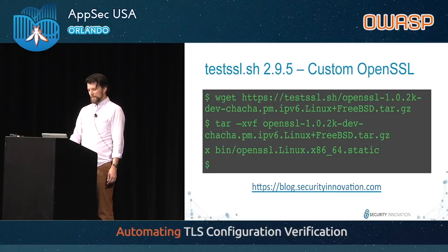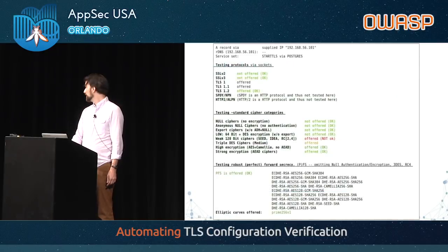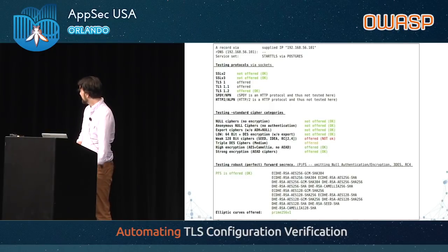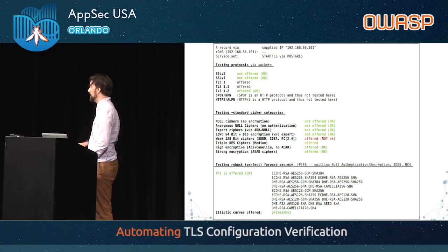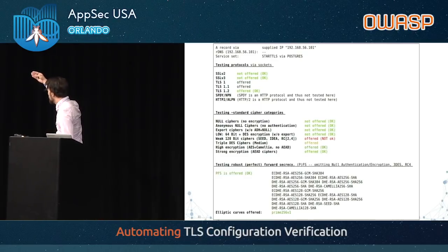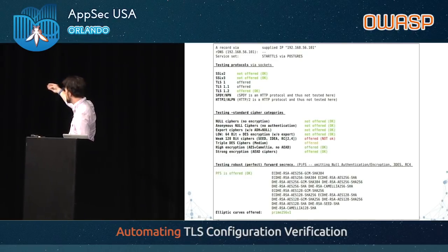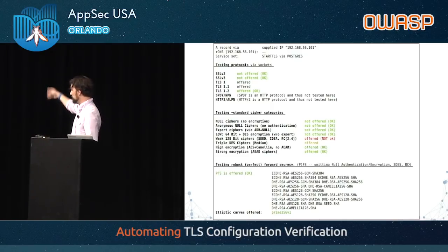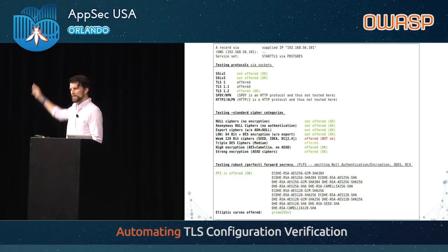We all know that live demos are a fool's errand, and I'm not a fool — here's a screenshot. This is the tool running against Postgres, testing protocols, ciphers, forward secrecy, and about two more pages of tests that it goes through, with red, green, and yellow results.